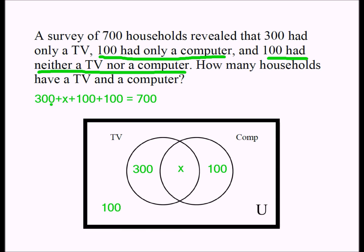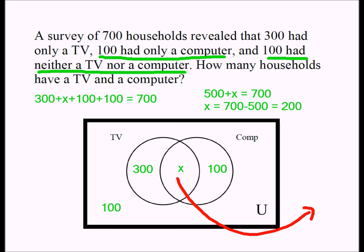Now we solve for x. 300 plus 100 plus 100 is 500, so x plus 500 equals 700, which means x is 200. So there's our solution: 200 households had both a TV and a computer.